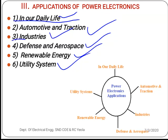In industry, power electronics systems are used to control and convert power from one form to another — such as AC to DC, DC to AC, or fixed AC to variable DC. In all these applications, power electronics systems are used. In defense and aerospace, power electronics converters are used for communication systems and various power conversion applications.